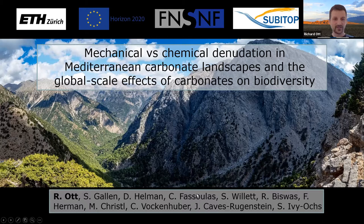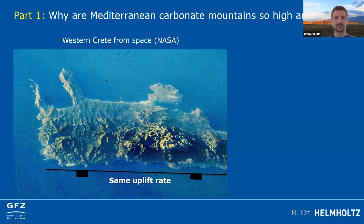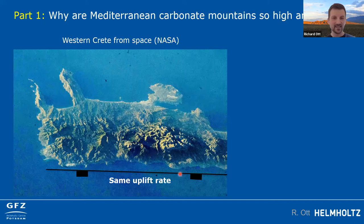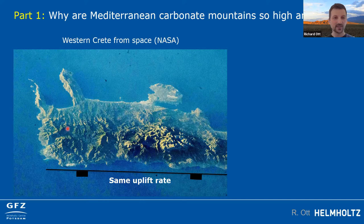I'd like to acknowledge the rather long list of people who have contributed to this work over the years. In the first part of this talk, I'll be mainly addressing why often in the Mediterranean region you have carbonate mountains that seem quite high and steep. This is a NASA picture from the 1970s. I've annotated a fault line offshore that's uplifting the coastline, with a constant uplift rate known from marine terraces, giving a mountain range about 1,000 meters high.